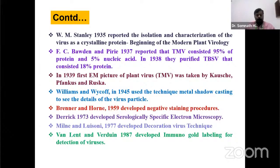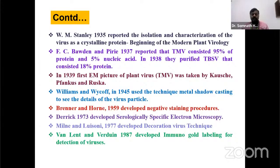Williams and Wykoff in 1944 used metal shadowing casting to see details of virus particles under electron microscopy. Brener and Horne developed negative staining procedures to study the structure of plant viruses. Derrick in 1970 developed serologically specific electron microscopy — immunosorbent electron microscopy. Immunoglobulin labeling for detection of viruses was discovered by Van Lent and Weir in 1987.